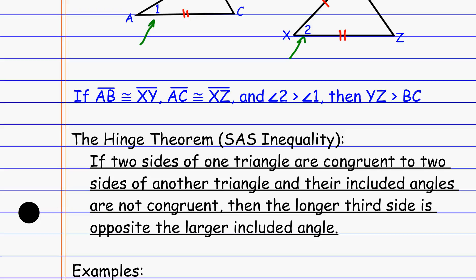So if two of the sides are congruent with one another, and the included angles are not congruent, then we can make a conclusion about the third side. That third side — the longer third side — is always across from the larger angle.